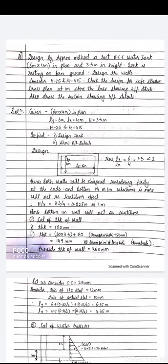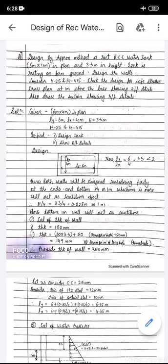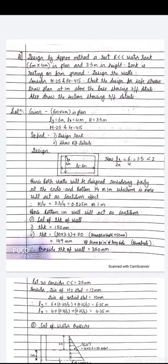We have to design the tank and show reinforcement detailing. First, we draw the plan: ly is 6 meters and lx is 4 meters. We find the ratio ly by lx, which comes out less than 2. We must check whether this ratio is less than two or greater than two.